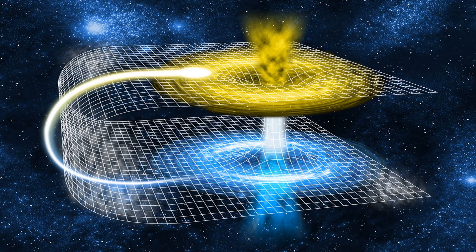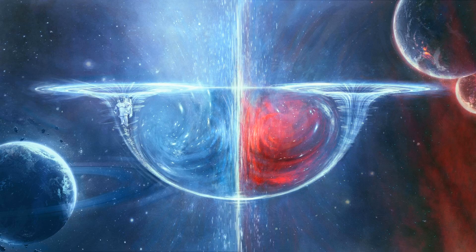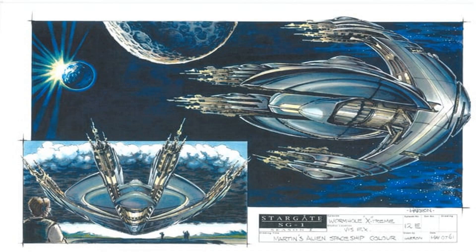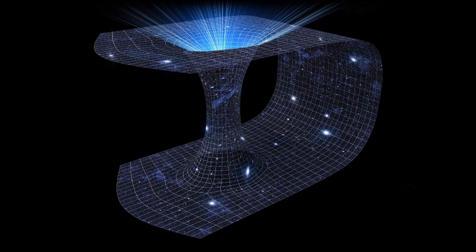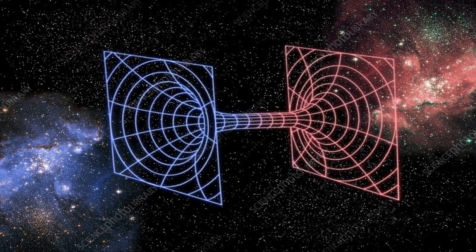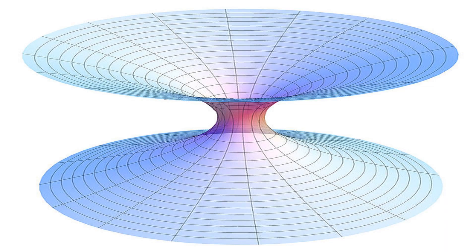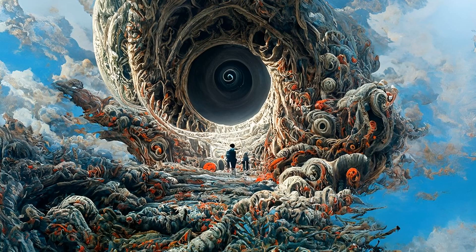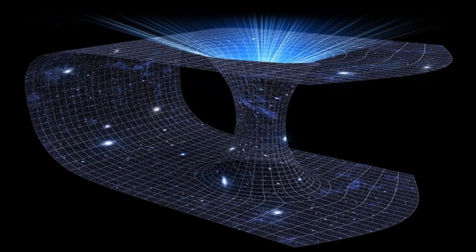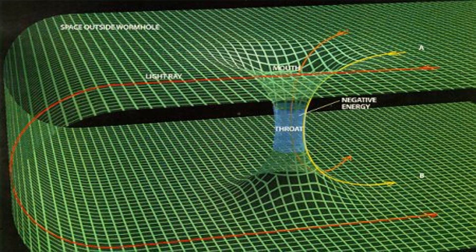Wormholes are a fascinating concept borrowed from science fiction that proposes the existence of tunnels in spacetime. These hypothetical structures, often depicted as shortcuts or bridges between two distant points in the universe, have captured the imagination of both scientists and enthusiasts. If wormholes were to exist and be stable, they could potentially allow for almost instantaneous travel across vast cosmic distances, surpassing the limitations of conventional space travel.